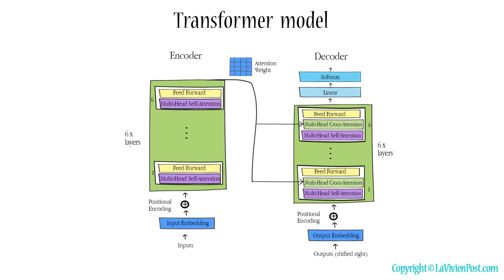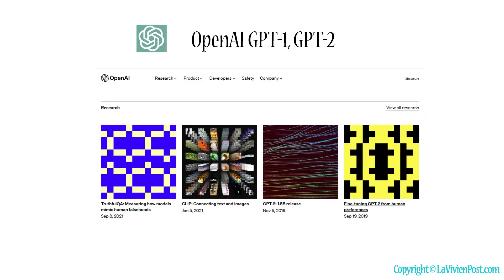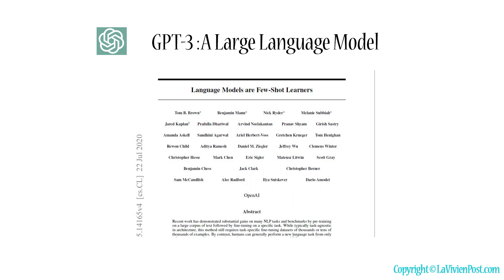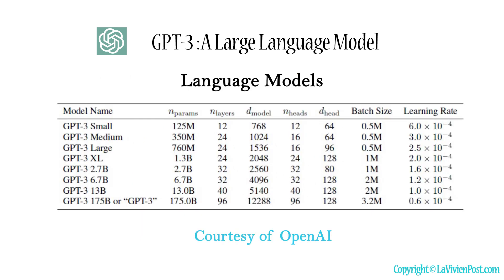The Transformer model was introduced in 2017. Since then, OpenAI pushed out GPT-1 and GPT-2 in 2018 and 2019 respectively based on the transformer model. Fast forwarding to 2020, the capacity of transformer language models had increased substantially from 100 million parameters to 175 billion parameters. OpenAI named this model GPT-3.